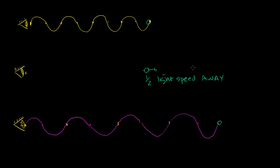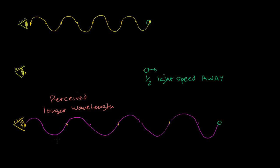Even though from the perspective of each of these objects — if you're traveling with each of them — the frequency and wavelength of the light emitted is the same. The only difference is this source is moving away from me, or I'm moving away from it, depending on how you want to view it. My eye will get each of these successive wave trains and it's going to say there's a longer wavelength here — a perceived longer wavelength, and also a perceived lower frequency.